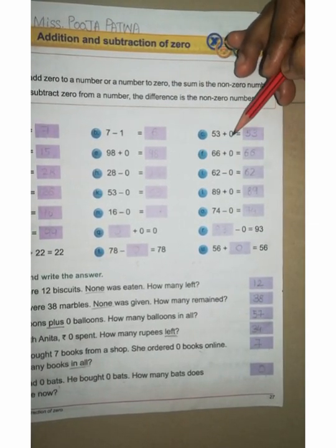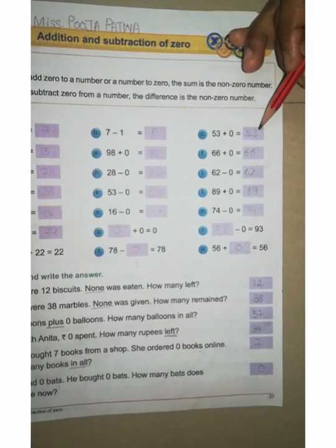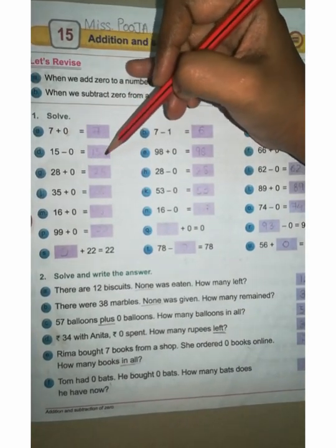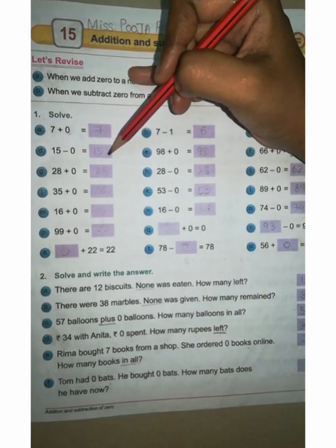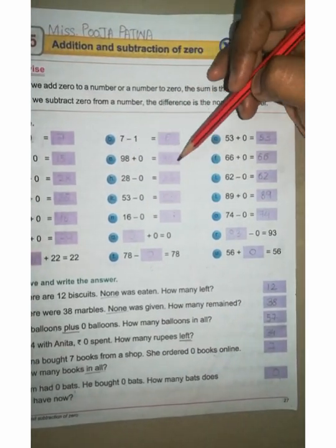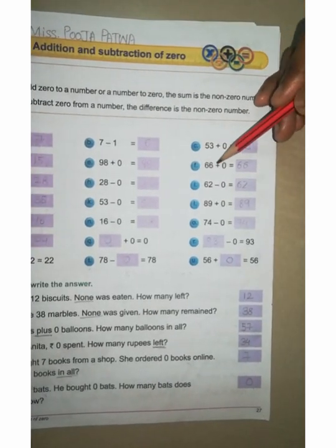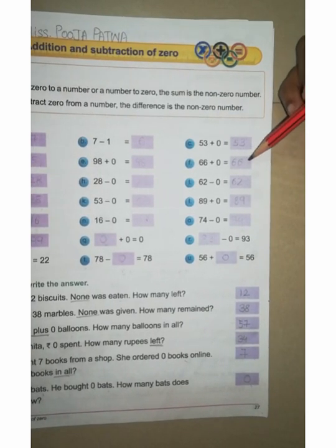D: 15 minus 0 equal to dash. Same, zero no value, as it is you can write 15. E: 98 plus 0 equal to dash. 98 plus 0, your answer comes 98. F: 66 plus 0 equal to dash. As it is you can write 56, 56.